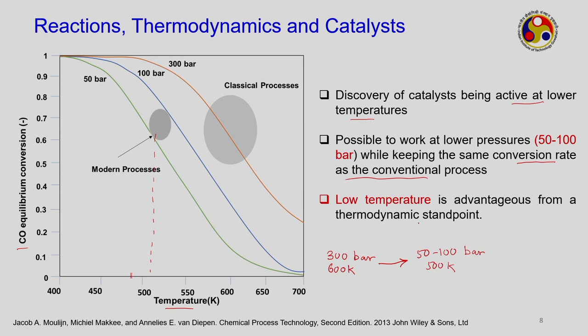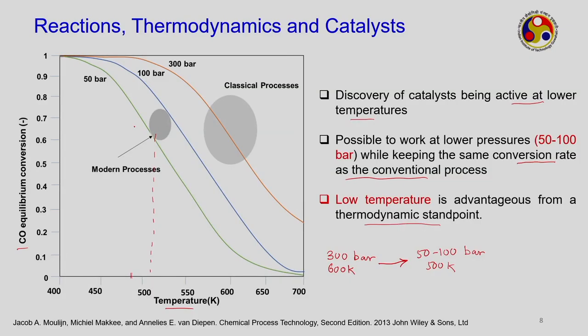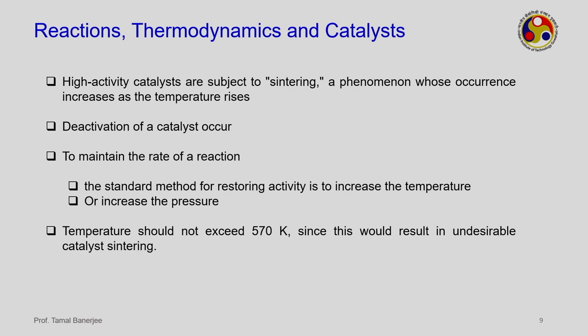Low temperature is advantageous from a thermodynamic standpoint, since lower temperature gives higher conversion. However, high-activity catalysts are subject to sintering — a phenomenon occurring due to temperature rise. At the operating temperature of around 500 K in modern processes, deactivation of the catalyst can occur.